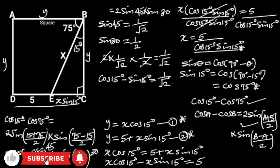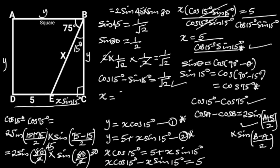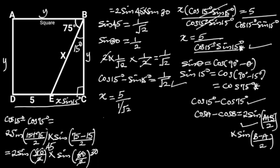If we replace cos 15 degrees minus sine 15 degrees with 1 over root 2, we will have X is equal to 5 divided by (1 over root 2). This can be written as X is equal to 5 times root 2 over 1, which is equal to 5 root 2. Hence, X is equal to 5 root 2 units.